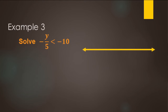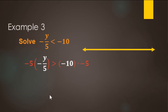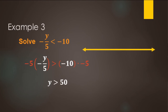Pause the video, solve this one, and then come back. We've got to get y by itself, so we undo the division by negative 5. We can think of the negative as going in the numerator or denominator. To undo the negative 5, we multiply both sides by negative 5. Since we're multiplying by a negative, we switch the direction of the inequality. Negative times negative is positive, and 5 divided by 5 is 1, so y is greater than — negative times negative is positive — 10 times 5 is 50. So y is greater than 50. On the number line, we have 0 and 50; since 50 is not a solution it's strictly greater than, we get an open circle and shade to the right.